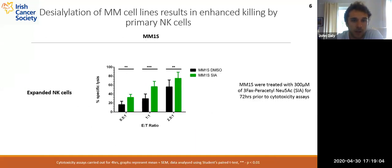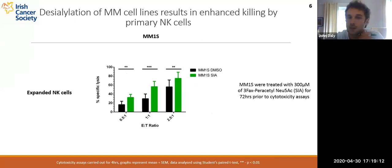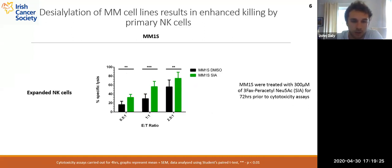We desialylated the myeloma cell line NM1S with a sialyltransferase inhibitor, 3-Fax-peracetyl Neu5Ac. The myeloma cells were cultured with this inhibitor for 72 hours prior to the cytotoxicity assay. Similar to the neuraminidase data, we observed a strong increase in killing of the desialylated myeloma cells versus the DMSO-treated control.